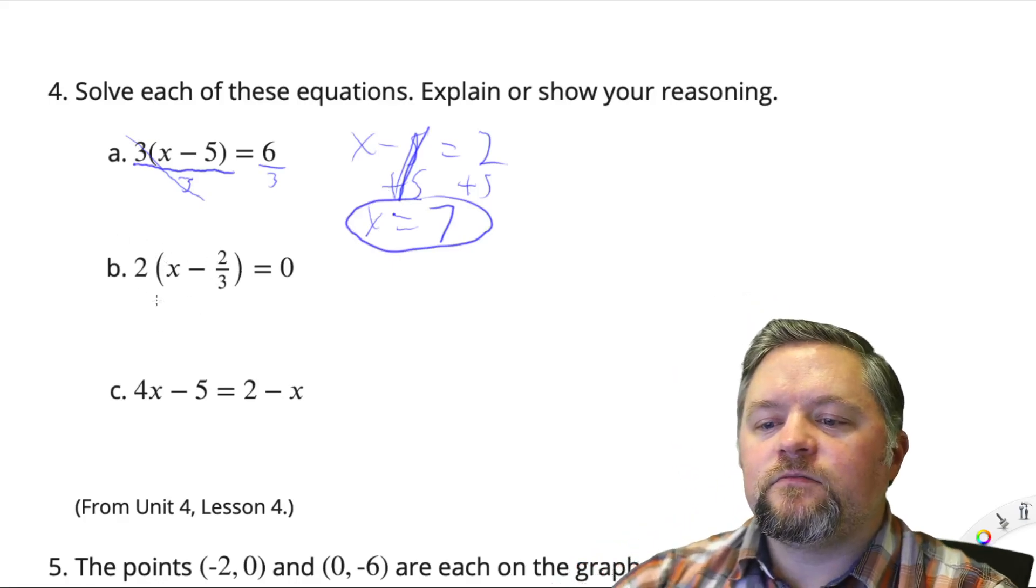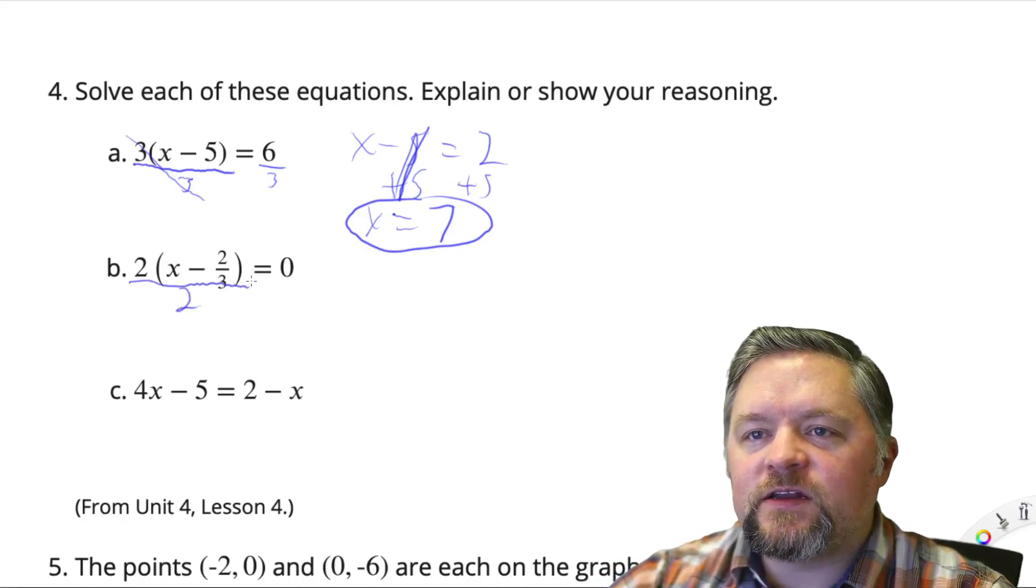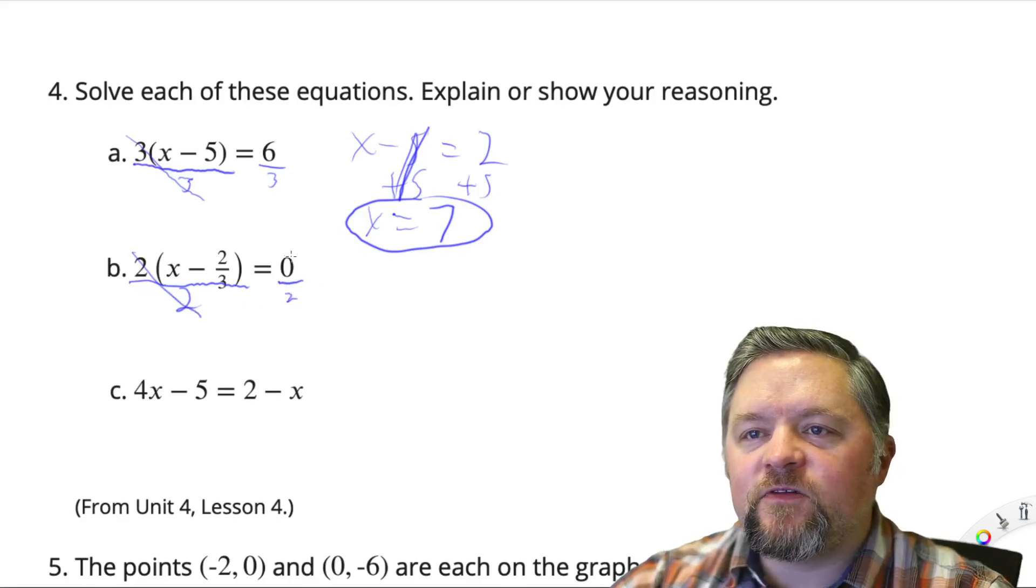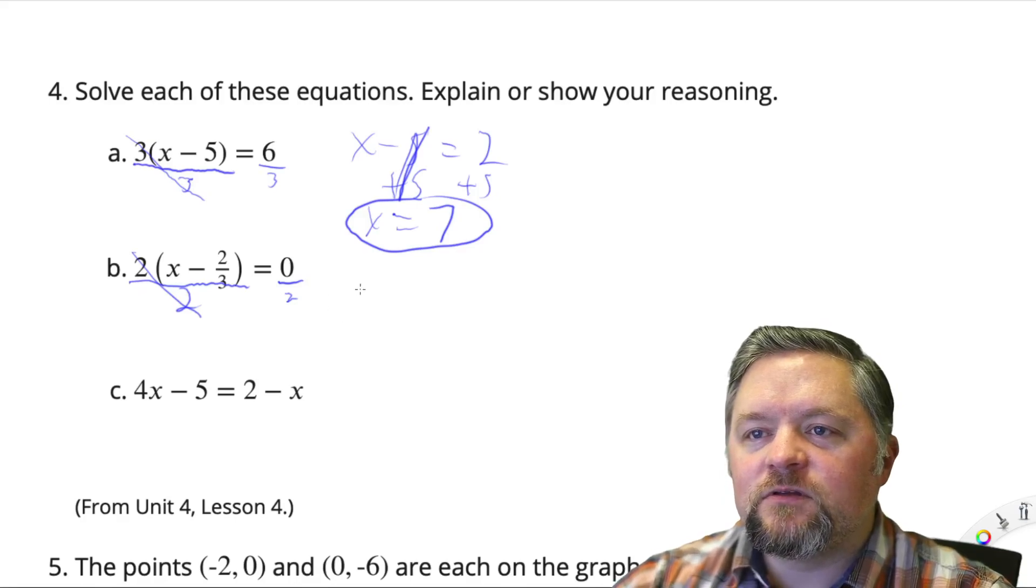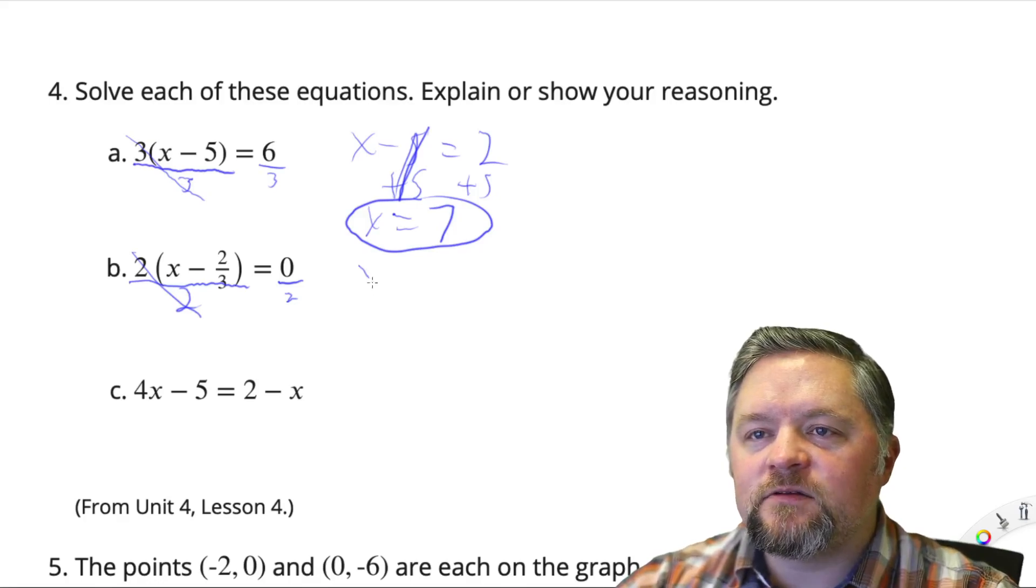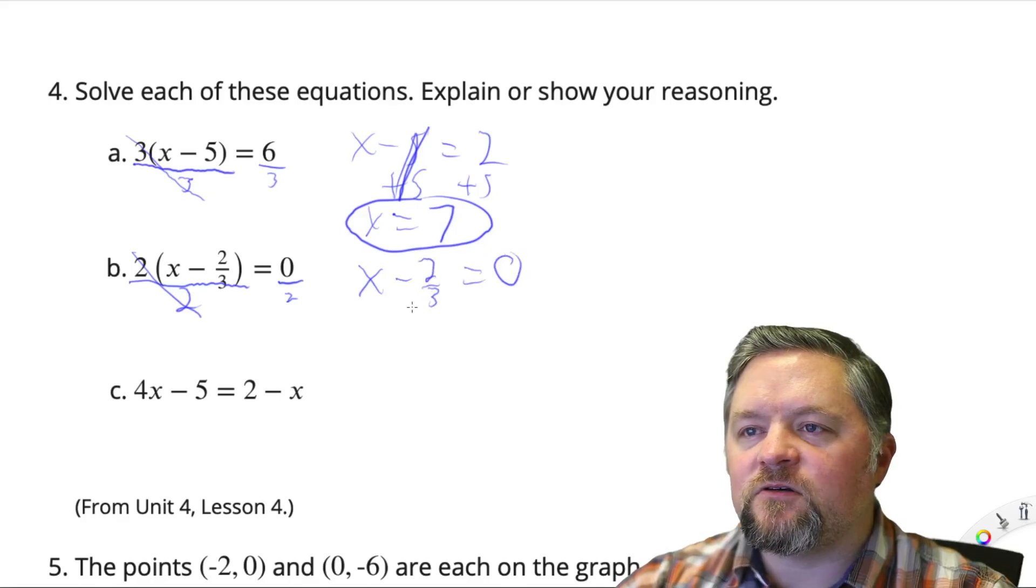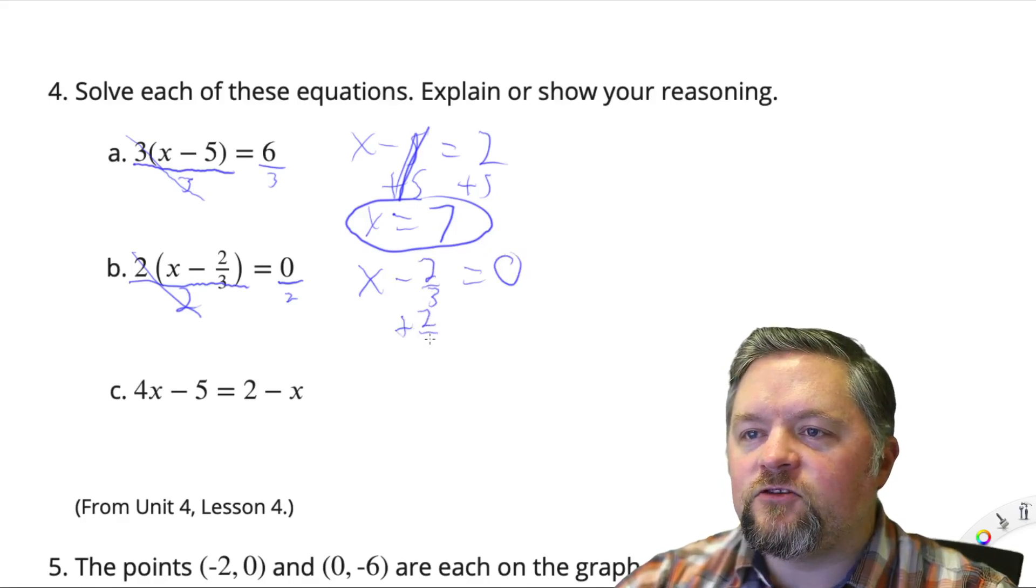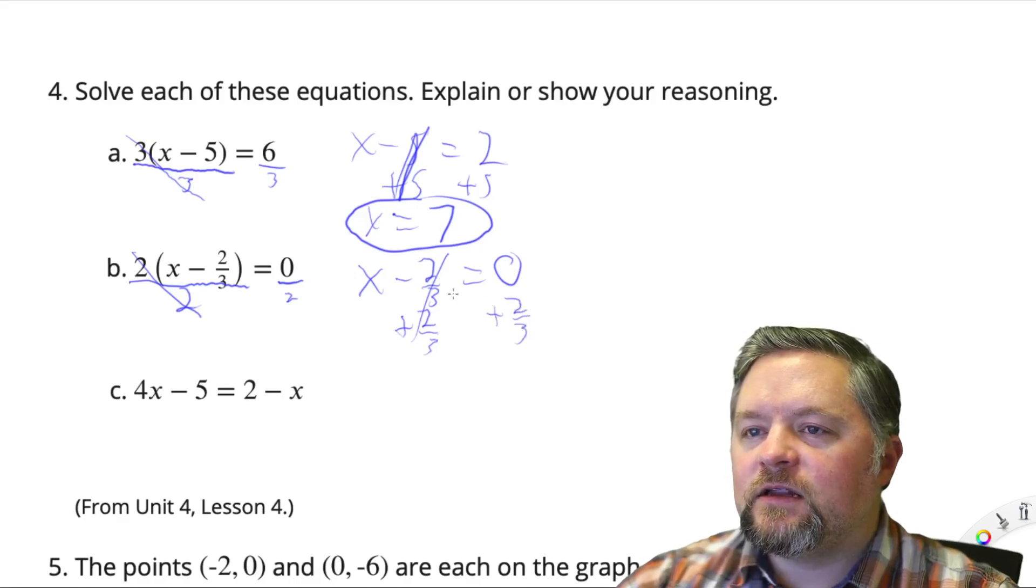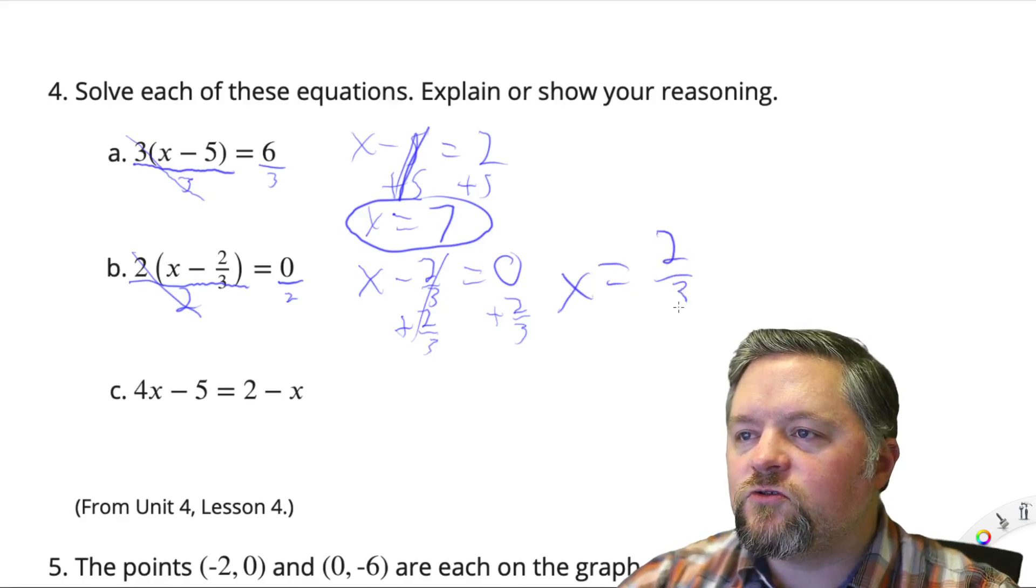Now, another one with a nice number out in front we can get rid of. If I divide that side by 2 and divide that side by 2, 2 over 2 goes away. 0 divided by 2, you get $0. You put it in two piles, there's still $0 in each pile. So x minus 2 thirds equals 0. Add 2 thirds to each side. Those will cancel. And you are left with x equals 2 thirds.